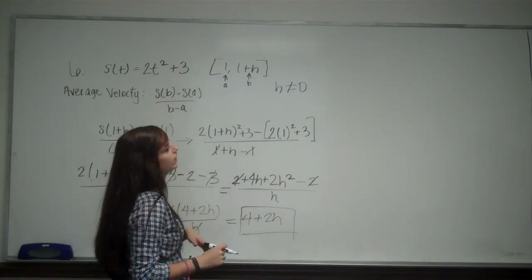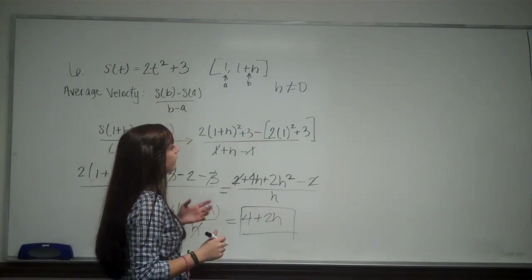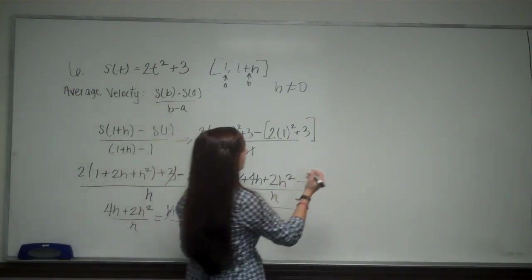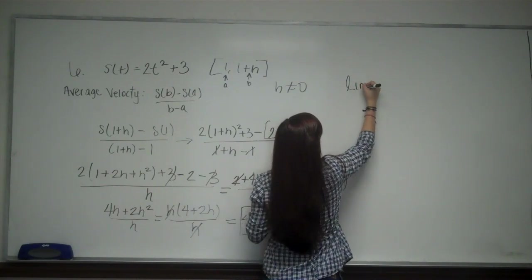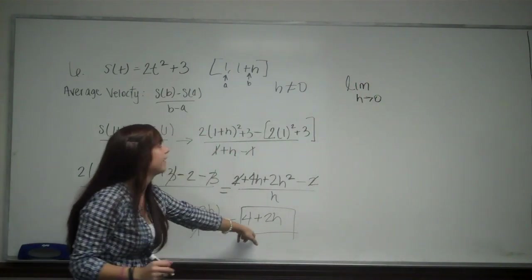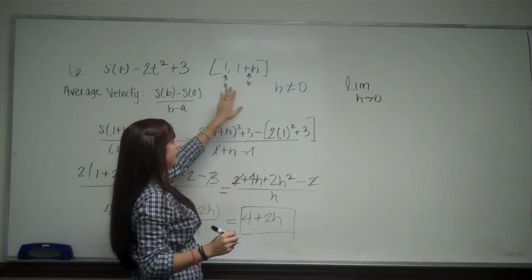Instead, remember, instantaneous velocity, I want to find the limit as h goes to 0 at 1 second. So we're going to find the limit as h goes to 0 of the average velocity from 1 plus h to 1.